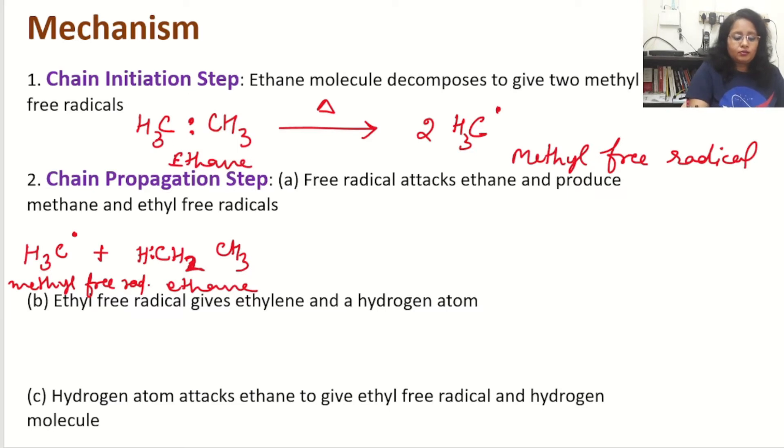Now what is going on? This one electron is moving here and this one electron is moving here. And what will happen? Methane is formed and ethyl free radical CH2CH3. This is called ethyl free radical. So in chain propagation first step, methane and ethyl free radical is formed.